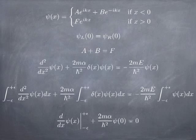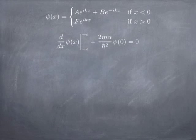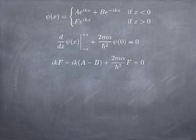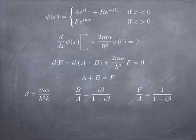We get the simple result that the difference in the derivative of psi between just to the right and just to the left of the origin, plus 2m alpha over h-bar squared times the value of the wave function at the origin, must be zero. Sticking in the definitions of psi just to the left and right gives: ikf minus ika minus b plus 2m alpha over h-bar squared times f equals zero. Since a plus b equals f, we can eliminate b and solve for f over a, then put f over a back in to solve for b over a.